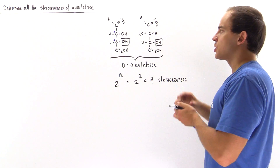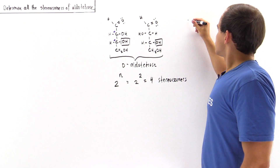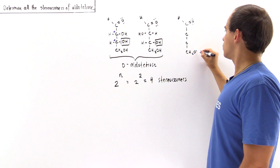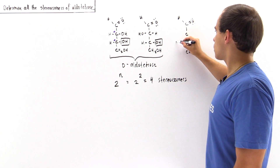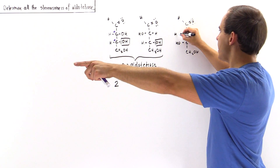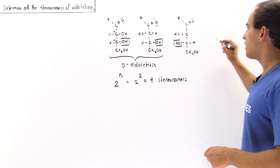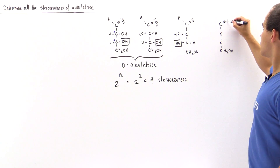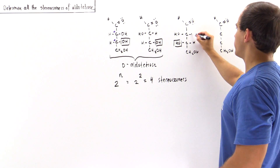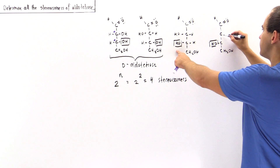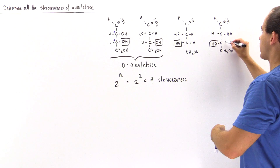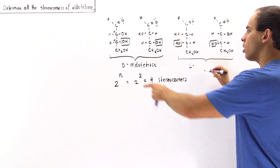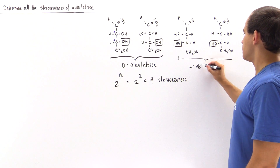We can also look at the L-aldotetroses. The L-aldotetrose has the OH on the last stereogenic carbon pointing to the left side. In the third stereoisomer, both OH groups on the middle carbons point to the left. In the fourth stereoisomer — also an L-aldotetrose — the OH on the last stereogenic carbon still points left, but the OH on the upper middle carbon points to the right. So these are the four stereoisomers of aldotetrose: two D-aldotetroses and two L-aldotetroses.